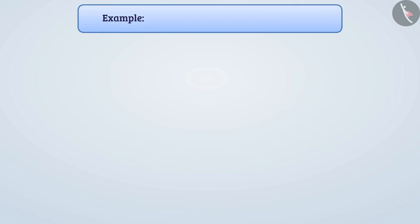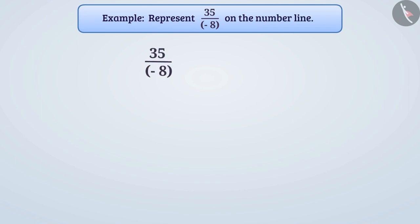Next example: represent 35 by minus 8 on the number line. If the denominator of a rational number is negative, first we make it positive. For this, we multiply both the numerator and denominator by minus 1 so that there is no change in the value of the number. This gives us the rational number minus 35 by 8.